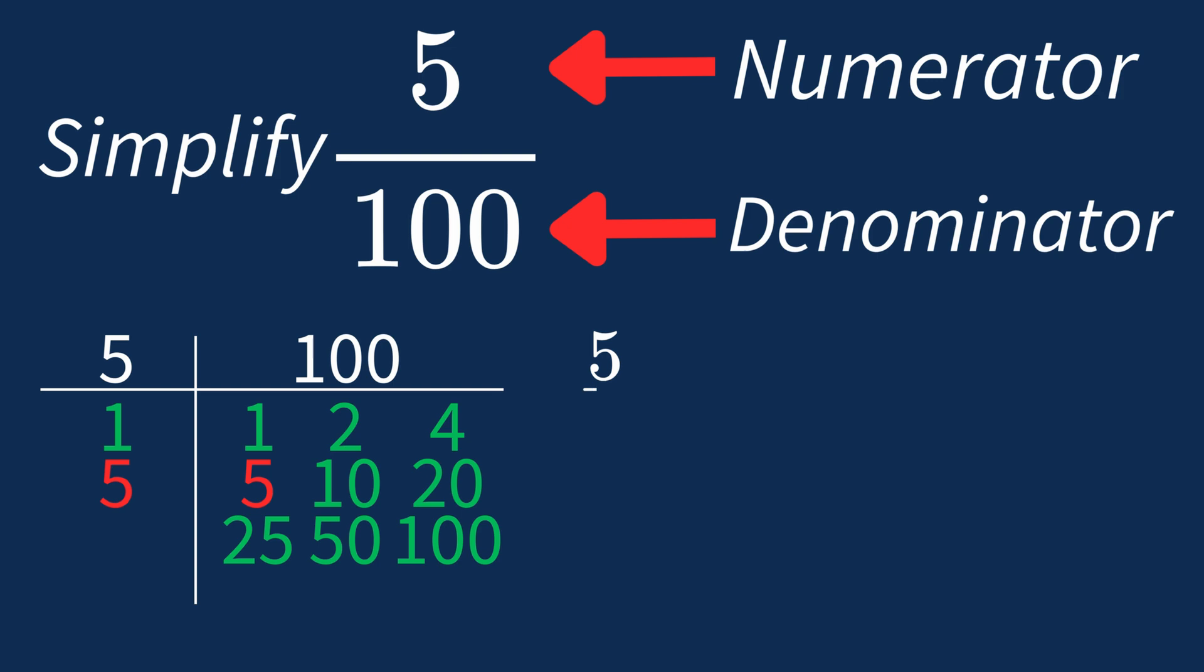Dividing the numerator 5 by 5 gives us 1. Dividing the denominator 100 by 5 gives us 20. So after dividing, the simplified fraction is 1 over 20.